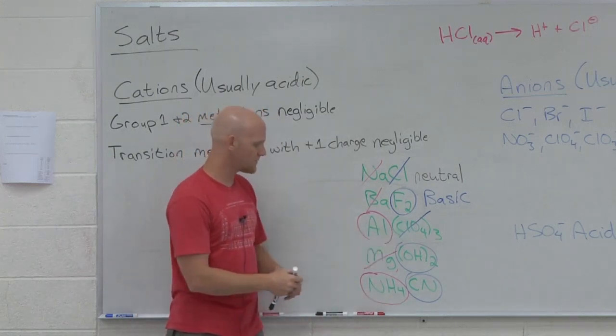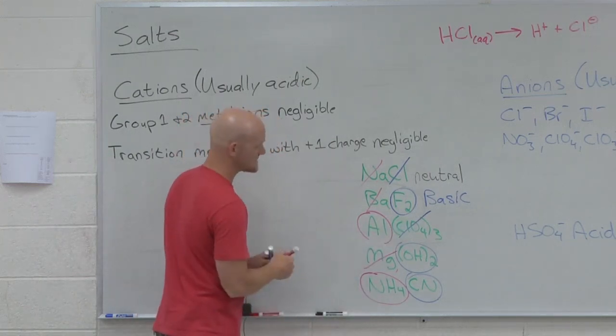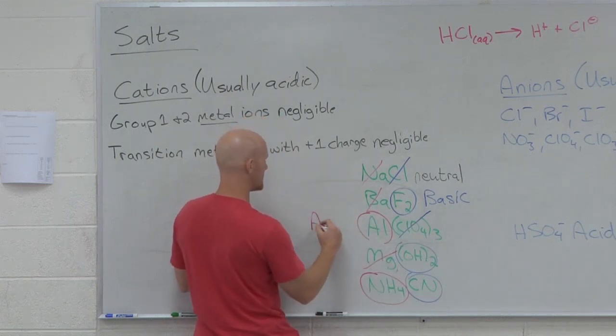What about Al(ClO4)3? He's got an acidic cation, a negligible anion. So overall, he's just acidic.